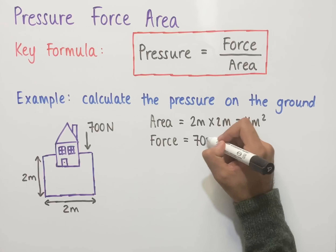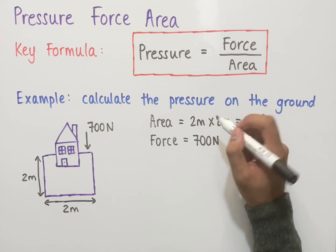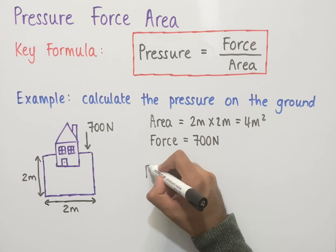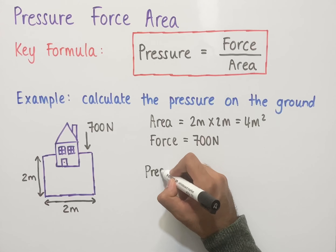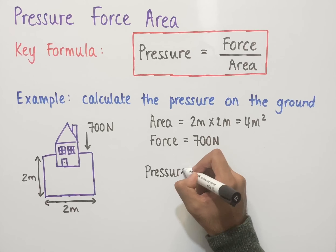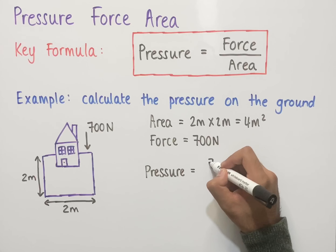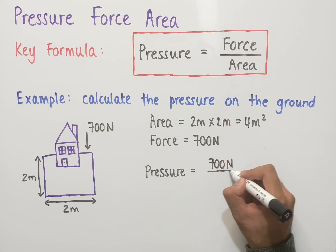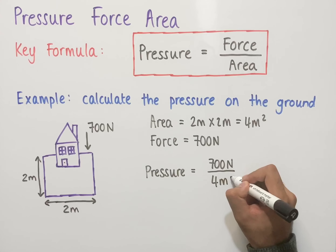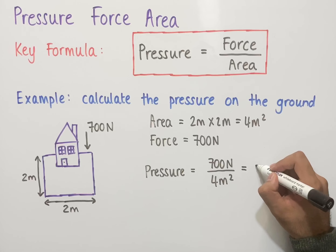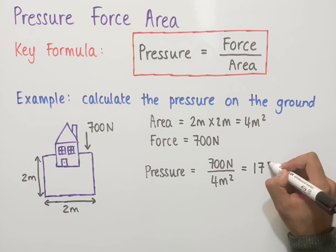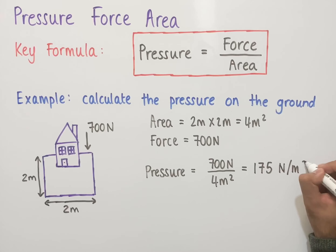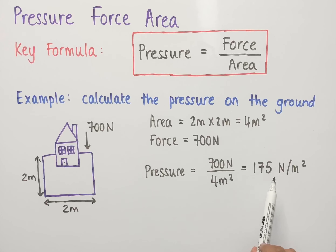Finally, to work out the pressure, we use the formula: pressure equals force divided by area. The force is 700 newtons, divided by the area of 4 meters squared. Working this out, we get an answer of 175 newtons per meter squared. So the pressure on the ground is equal to 175 N/m².